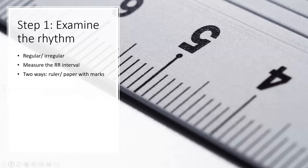In Step 1, examining the rhythm, we want to determine whether the rhythm is regular or irregular. We do this by measuring the R-R intervals. The space between the different R waves should be the same. You can measure this with a blank piece of paper by making little dots and moving them from one set to the next, or use a ruler to measure centimeters and confirm they remain consistently the same.